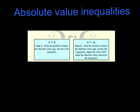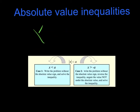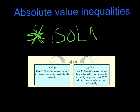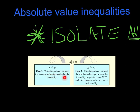So let's dive into absolute value inequalities. Again, the key note is that you need to isolate the absolute value — that's goal number 1. Once you've done that, you have two key scenarios. In case 1, you rewrite the problem and leave the inequality symbol. In case 2, you rewrite the problem without the absolute value sign, reverse the inequality, and negate the value that's not under the absolute value, then solve the inequality. Let's dive into one.